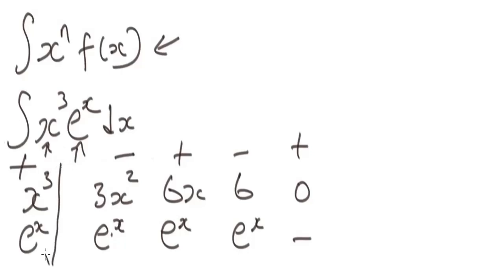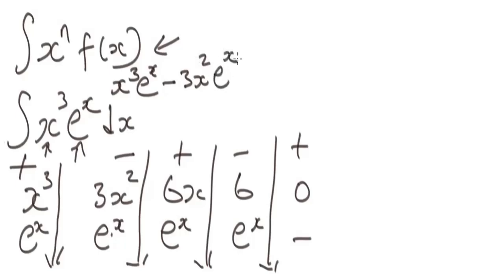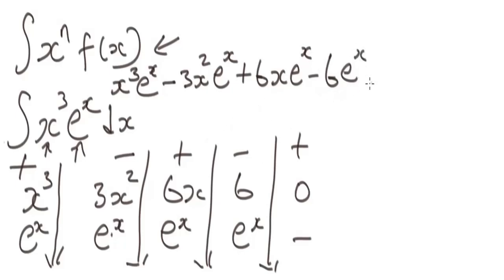After placing the alternating signs, you multiply diagonally across. So you get: x³·eˣ, then minus 3x²·eˣ, then plus 6x·eˣ, then minus 6·eˣ. Because this is an indefinite integral, add the constant plus C. That is the complete answer to this question.